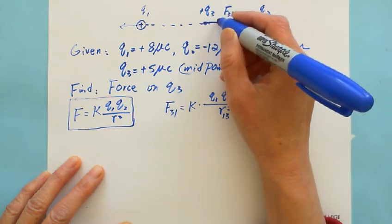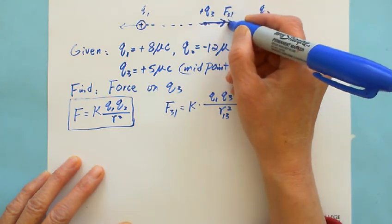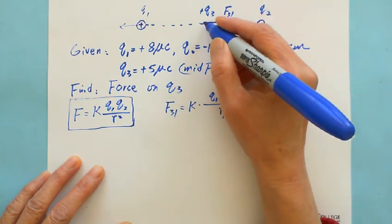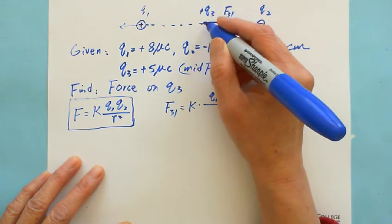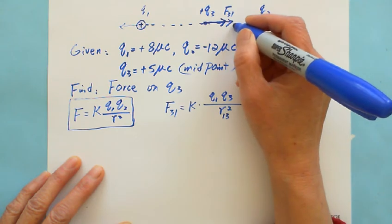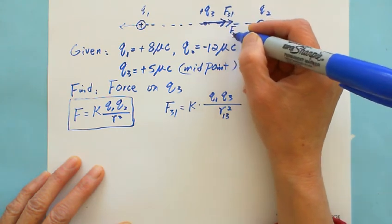The force comes from Q2 to Q3 is attraction. On Q3 it goes towards Q2. This is F32.